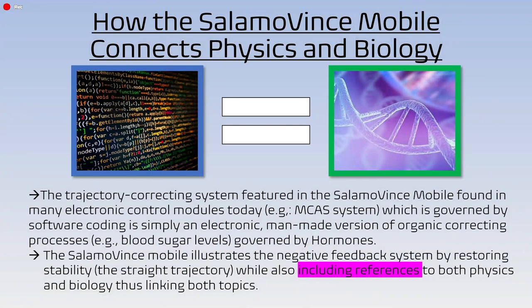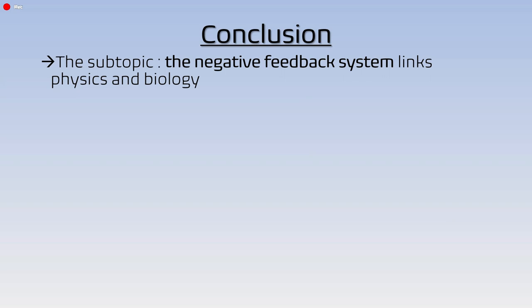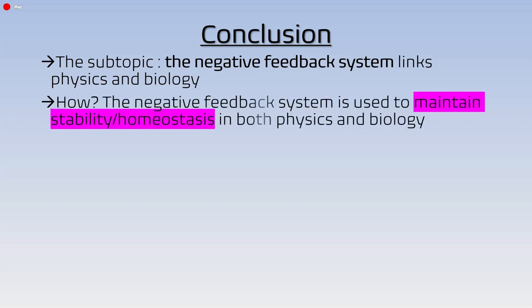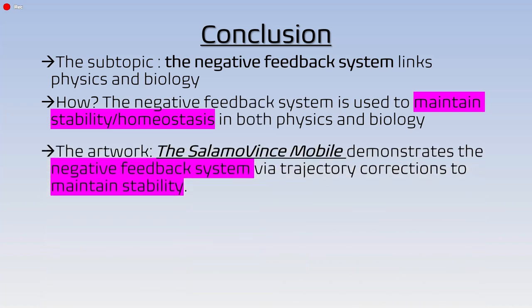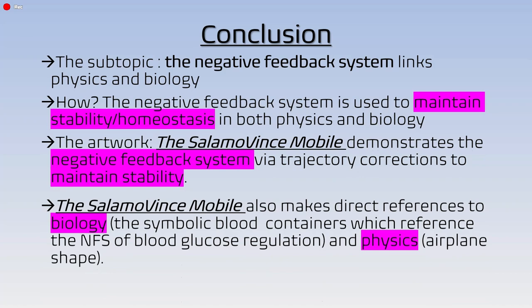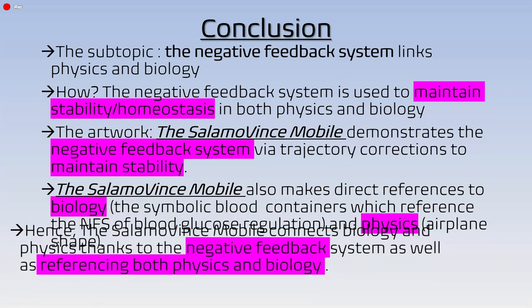The two blood vials on either side of the wings reference the instability of blood glucose levels when the system is taken out of equilibrium. To conclude: the negative feedback system links physics and biology in that it is used to maintain stability or homeostasis in both fields. The artwork, the Salamo Vince Mobile, demonstrates the negative feedback system via trajectory corrections to maintain stability. It makes direct references to biology through the symbolic blood containers referencing blood glucose regulation, and direct references to physics — specifically aeronautical engineering — via the shape of the robot superstructure, which resembles an airplane.